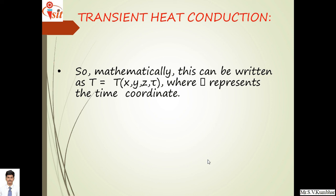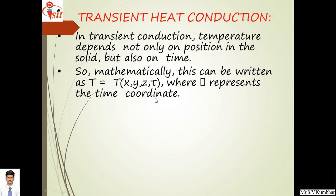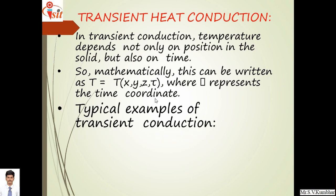We will start with transient heat conduction. Up to the previous lecture, there was steady state, meaning temperature was considered steady and would not change with respect to time. But in real practice, temperature varies from time to time. Mathematically, we write temperature T as a function of x, y, z (coordinate axes) and time T. In transient conduction, temperature depends not only on position in the solid but also on time.